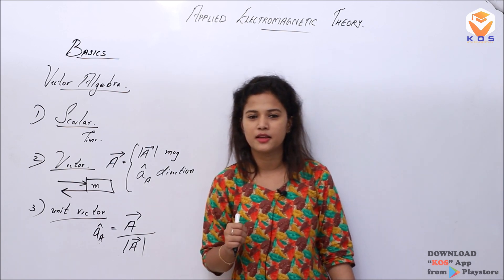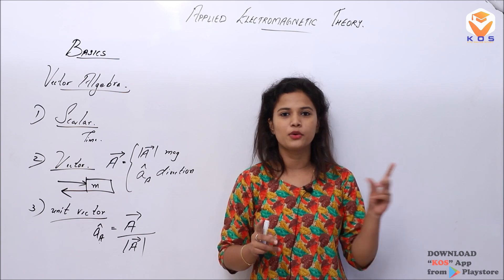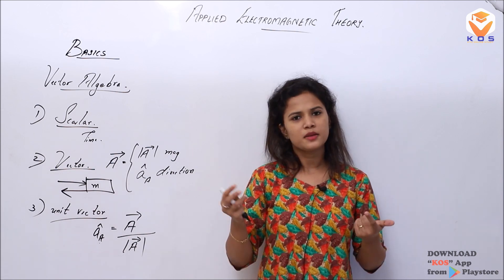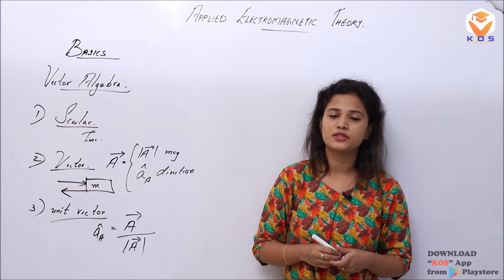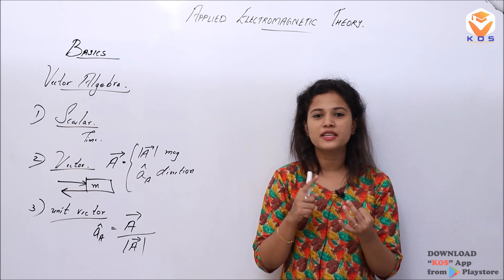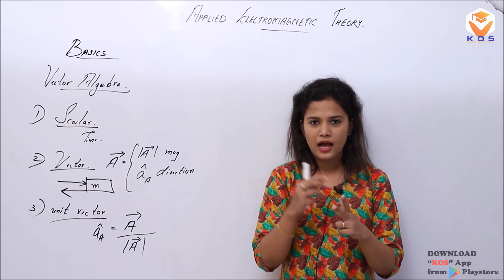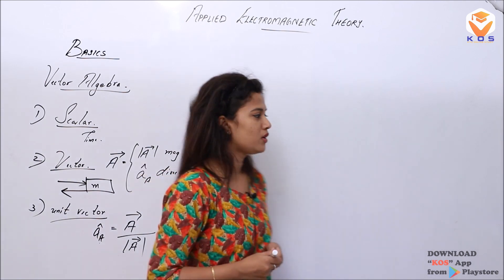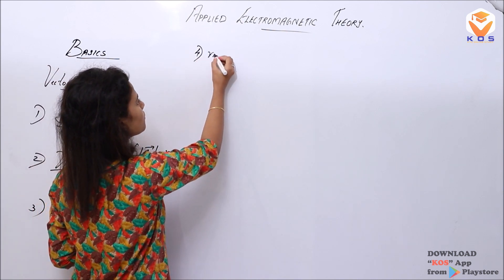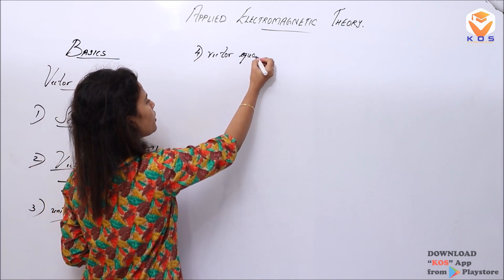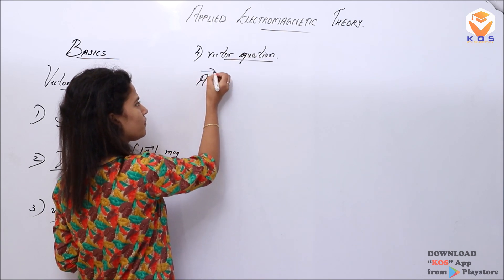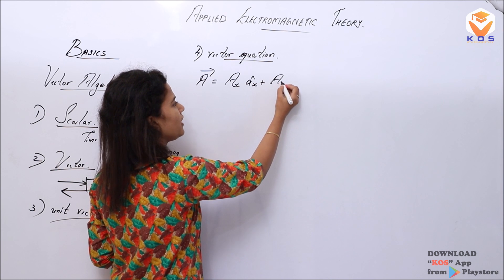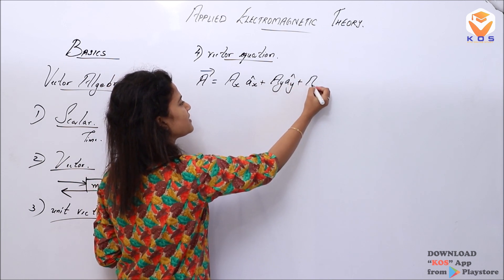The coordinate systems are of three types. The first one is the Cartesian or rectangular coordinate system. The structure includes Cartesian, cylindrical, and spherical. The vector equation for a vector A is defined as: A = AX·AX̂ + AY·AŶ + AZ·AẐ.